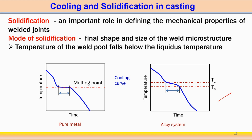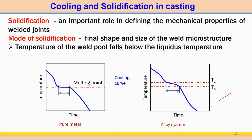In a casting process, the overall cooling curve has different phases on a time versus temperature diagram. We start with the pouring temperature, which includes some superheat above the melting point. When liquid metal is poured into the mold cavity, solidification starts at a certain point. The temperature difference between the pouring temperature and the solidification start temperature is known as the superheat temperature.